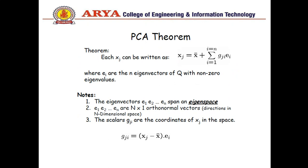PCA theorem: each xj can be written as xj equals x mean plus summation of i equals 1 to n, gji times ei. Here are eigenvectors of Q with non-zero eigenvalues. As I have discussed, we have a covariance matrix. By using the covariance matrix, we find eigenvalues, and according to these eigenvalues we will calculate eigenvectors.